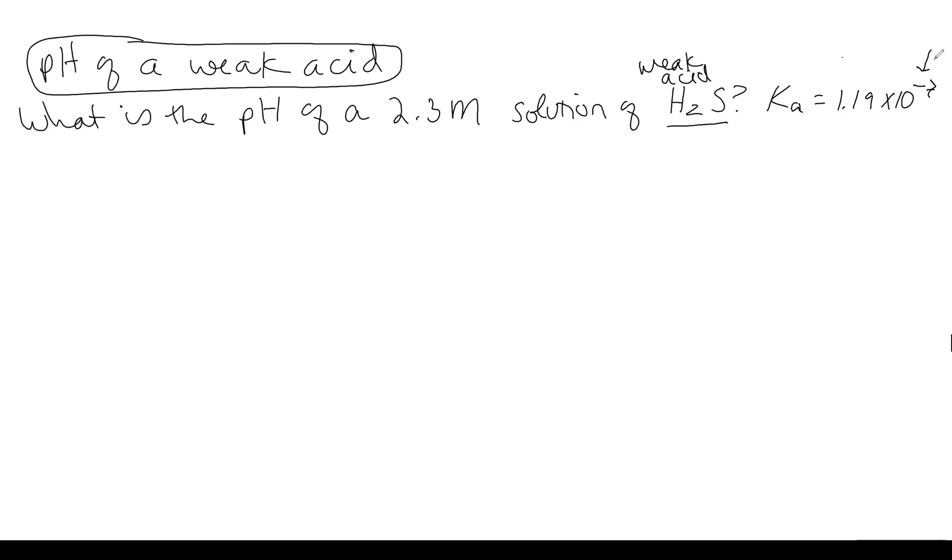So now anytime you see this collection of information, you know that you need to start thinking about an equilibrium problem. In particular, this is an acid equilibrium problem. And that's the part that everybody misses because people will start doing pH plus pOH is equal to 14. And they'll go down that route, which is incorrect.